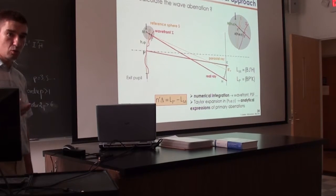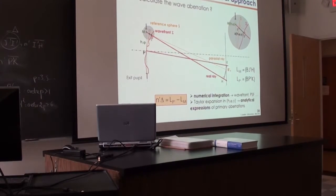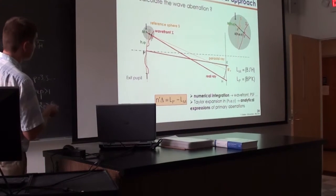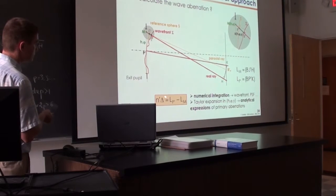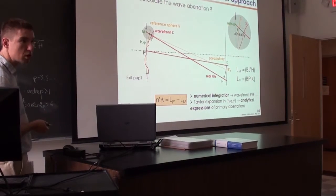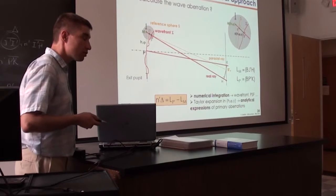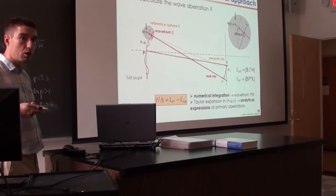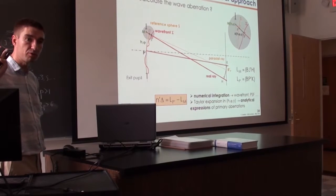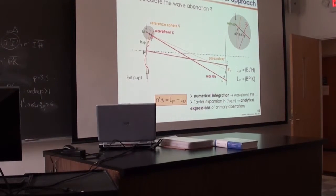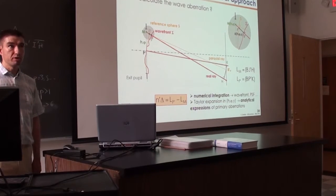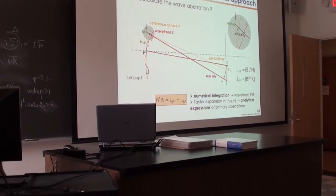Aberrations have all odd orders. What it means is that you can neglect these terms when you calculate I prime H, because this will prove that the optical path difference is of order P plus 1. So if you take a third-order aberration, it means the wave aberration will be of order 4 — in powers of the paraxial parameters, it will be H⁴, or H³ times Y, or H² times Y². It will always be Taylor expansions of power 4.